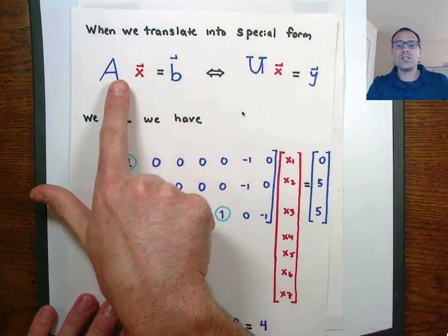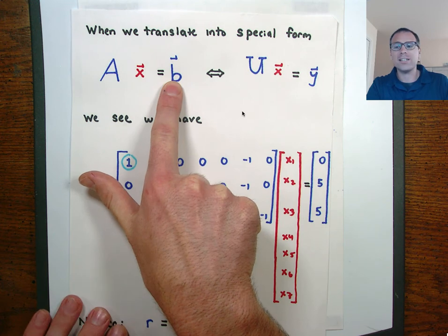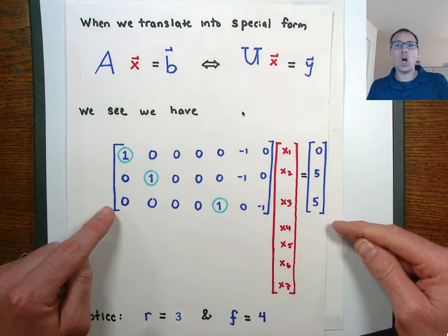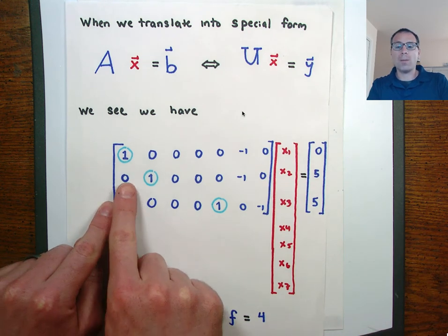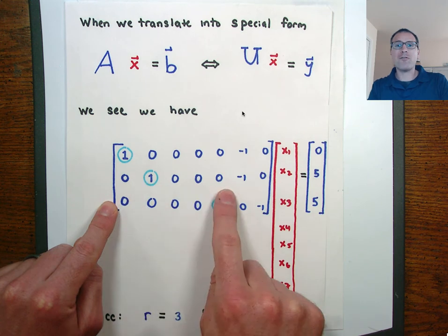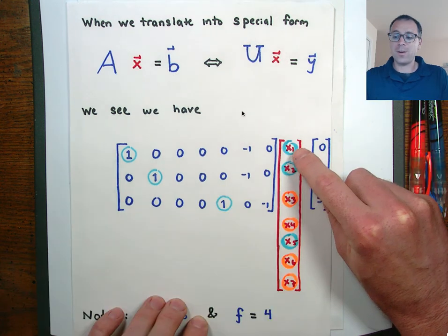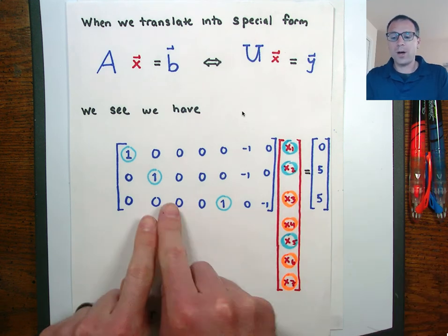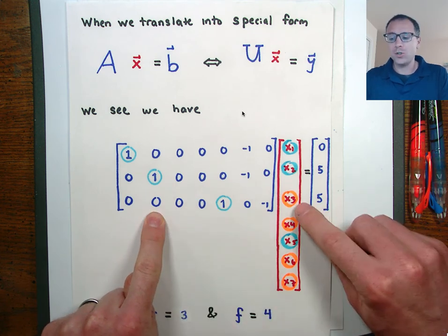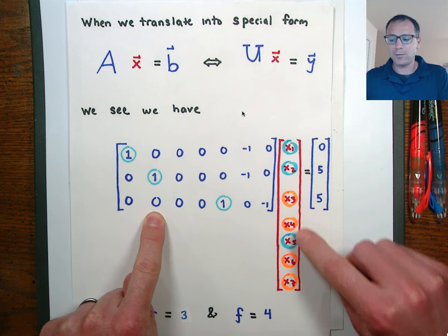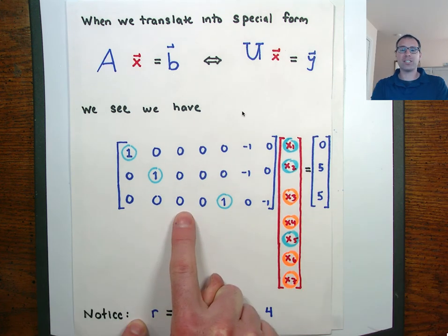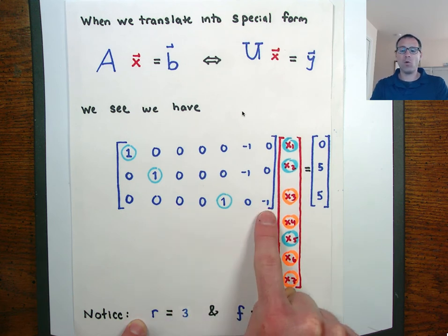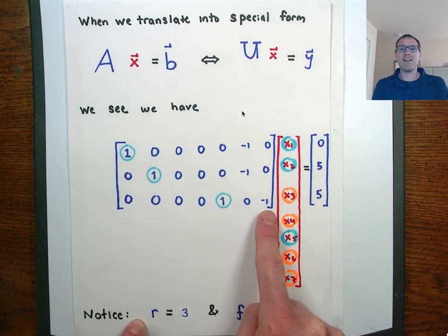I've now translated my original system AX = B that arose from a modeling context into a special system in RREF form. We immediately see columns 1, 2, and 5 are pivot columns, implying variables X1, X2, and X5 are pivot variables. The other variables, corresponding to the non-pivot columns, are free to choose. Our free variables are X3, X4, X6, and X7. The rank of this matrix is three — there are three pivot columns. The number of free variables is four. Three plus four equals seven, and there are indeed seven columns.